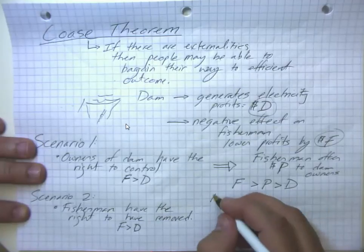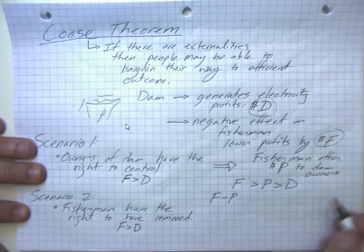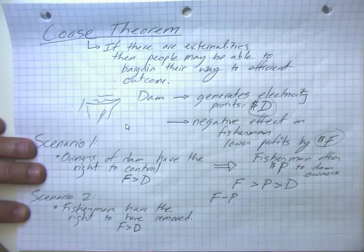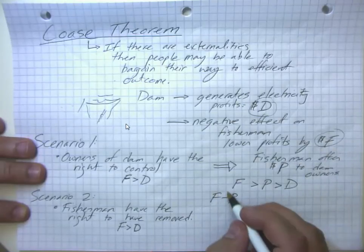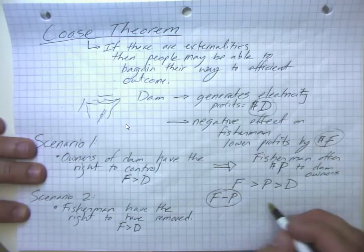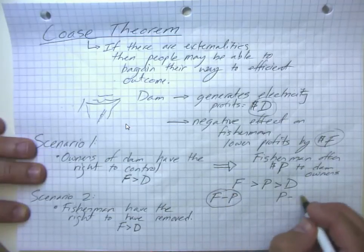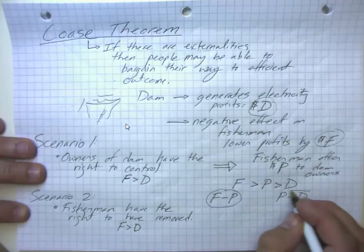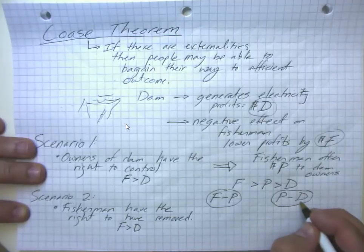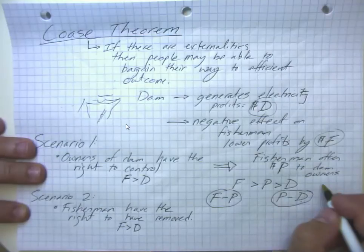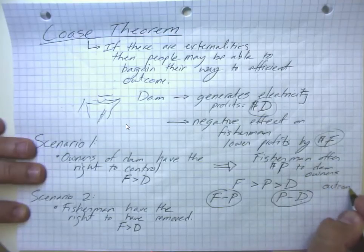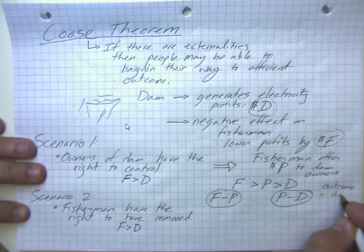Because the fishermen will then have gains of F minus P, whereas before they would get nothing, or they would suffer the harms of F. So fishermen are better off and the dam builders get paid price P, but they lose out on profits D, so they end up ahead. So the outcome is that the dam is destroyed.